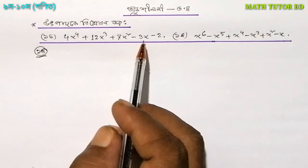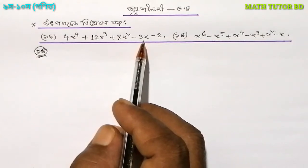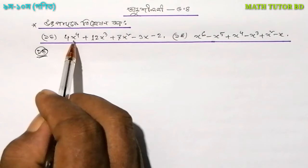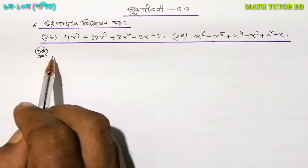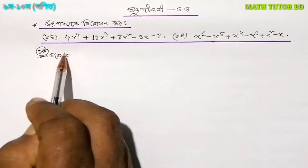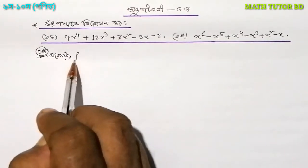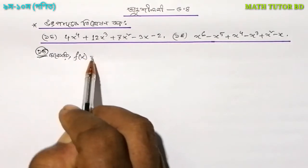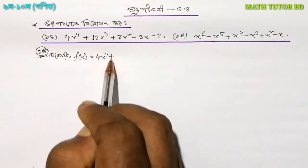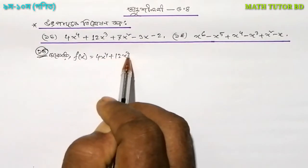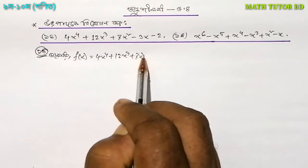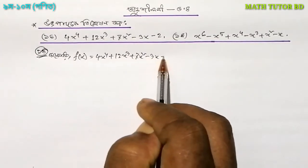I'm going to talk about this range. Now let's take 4. So I'm going to work with this x to the power 4. I'm going to talk to you about the method of function. f(x) is equal to 4x to the power 4 plus 12x cubed plus 7x squared minus 3x minus 2.